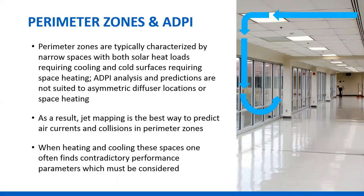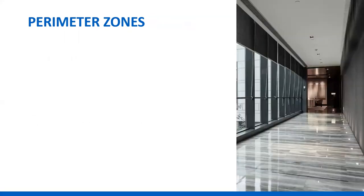The problem we have is that we need to both heat and cool this space. We find that there are things that happen in heating and cooling that have to be considered in our selection of devices. When there is a large change in air temperature discharged from a diffuser, there's a big change in the way the jet moves in the space.